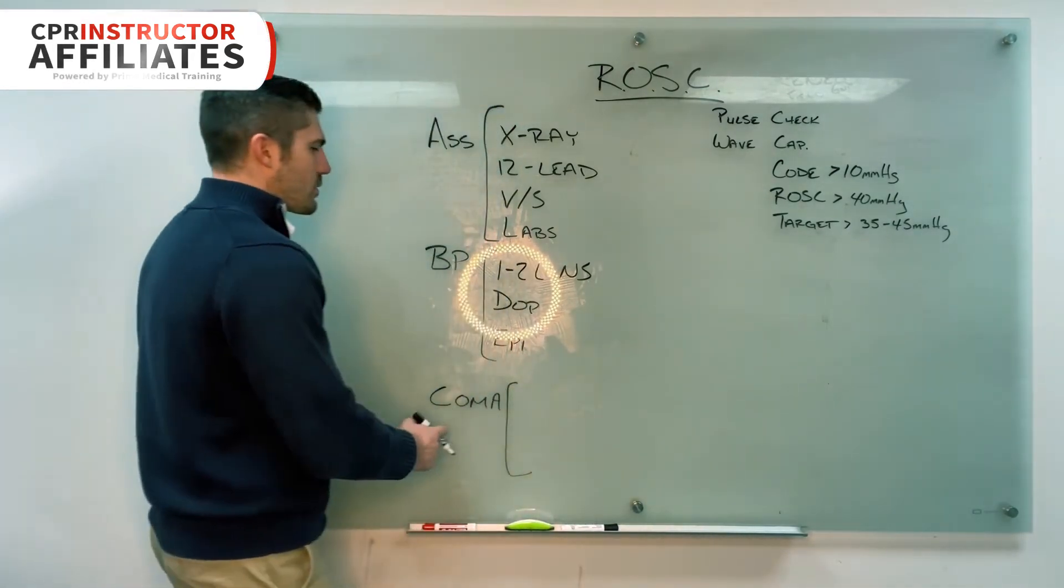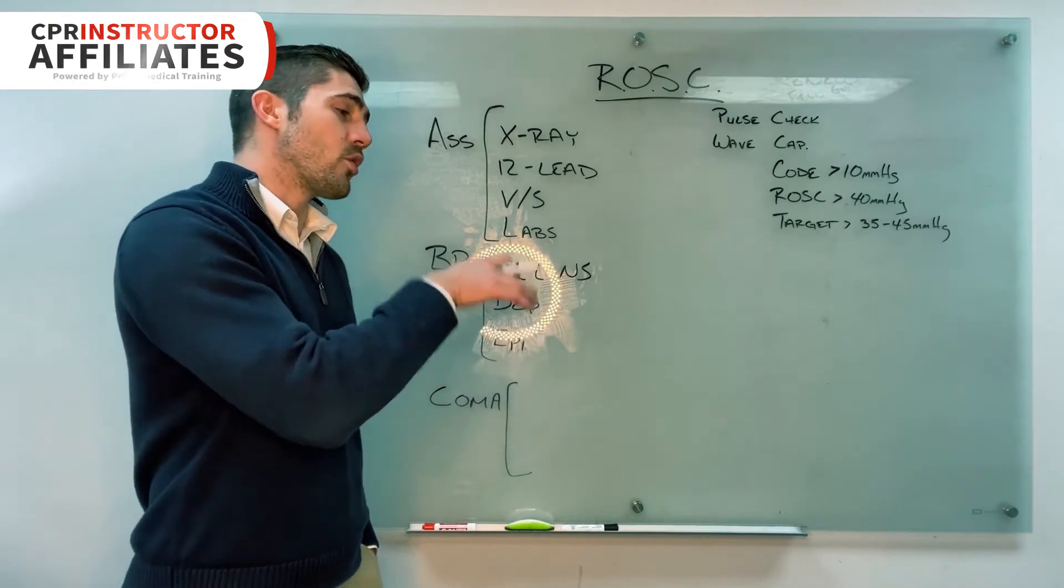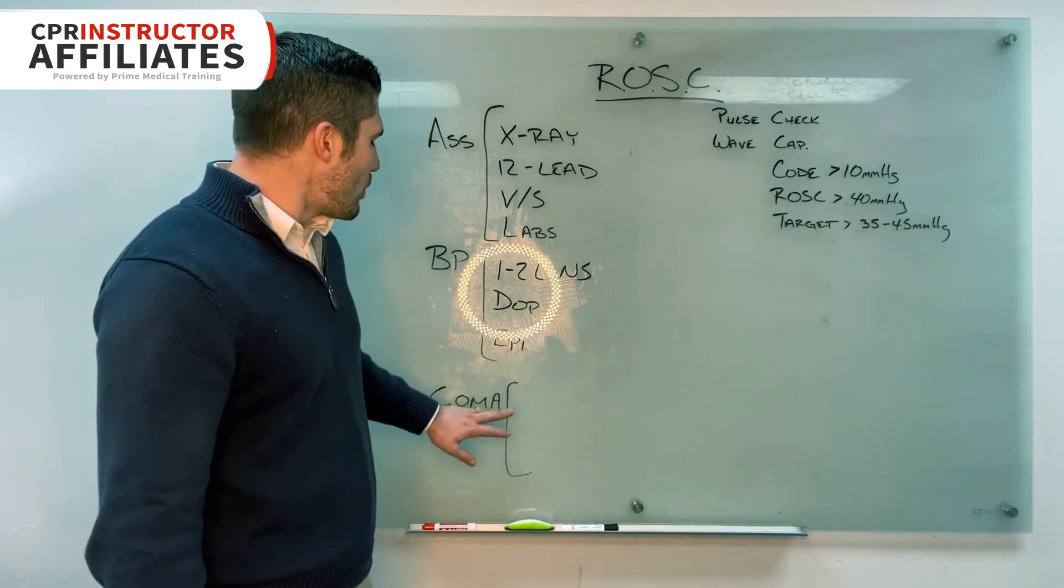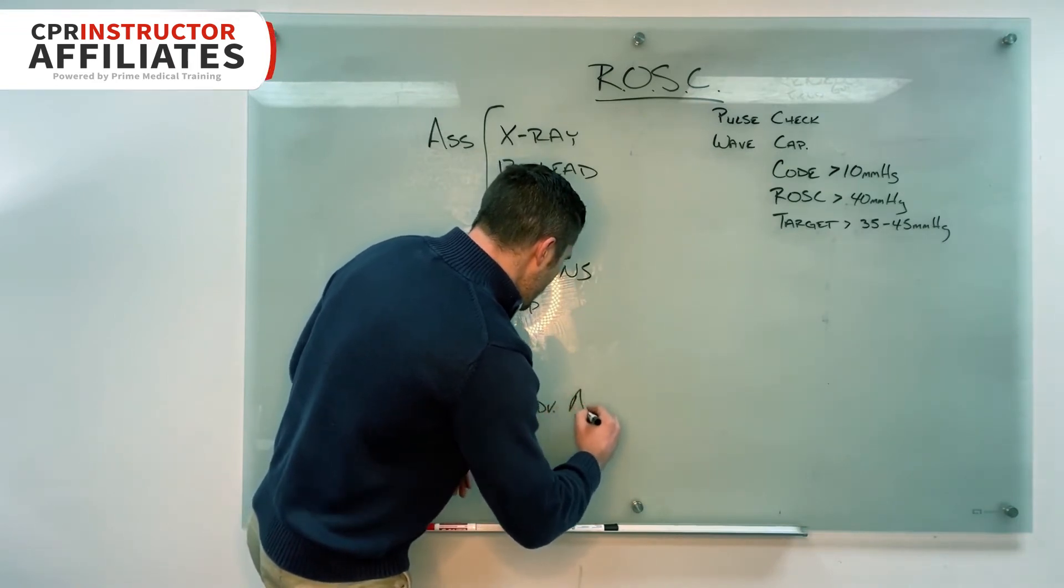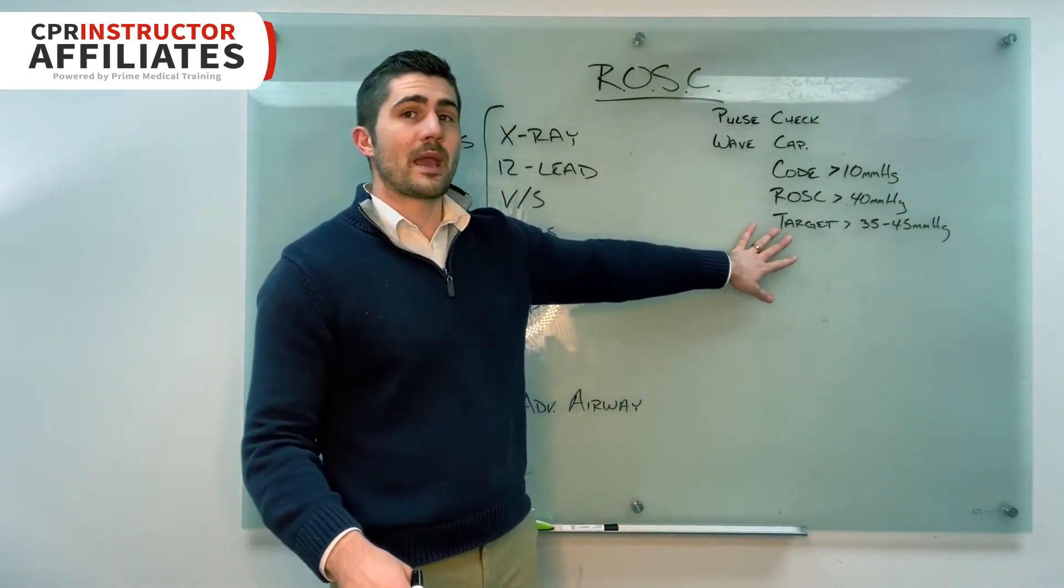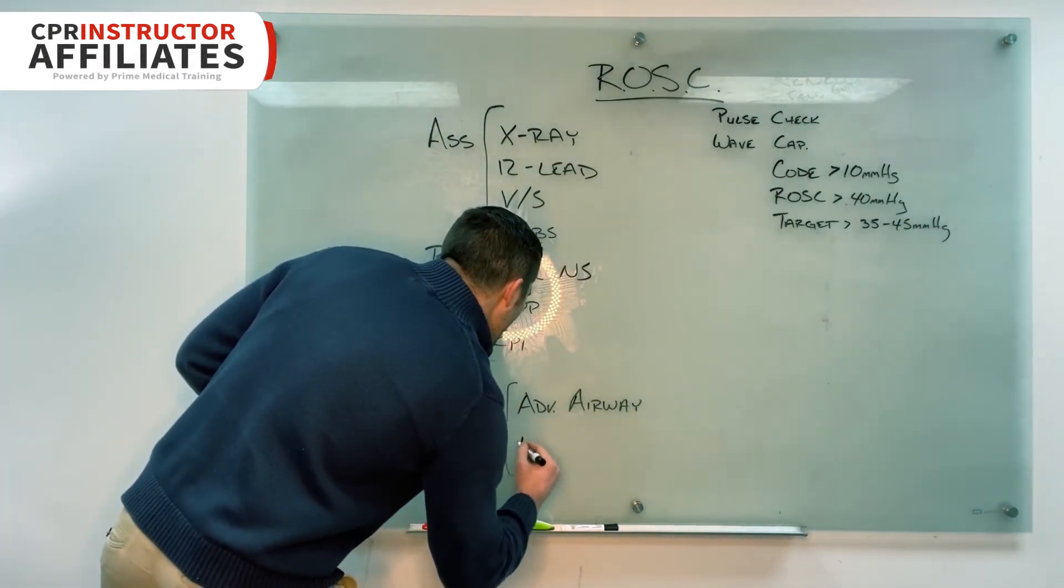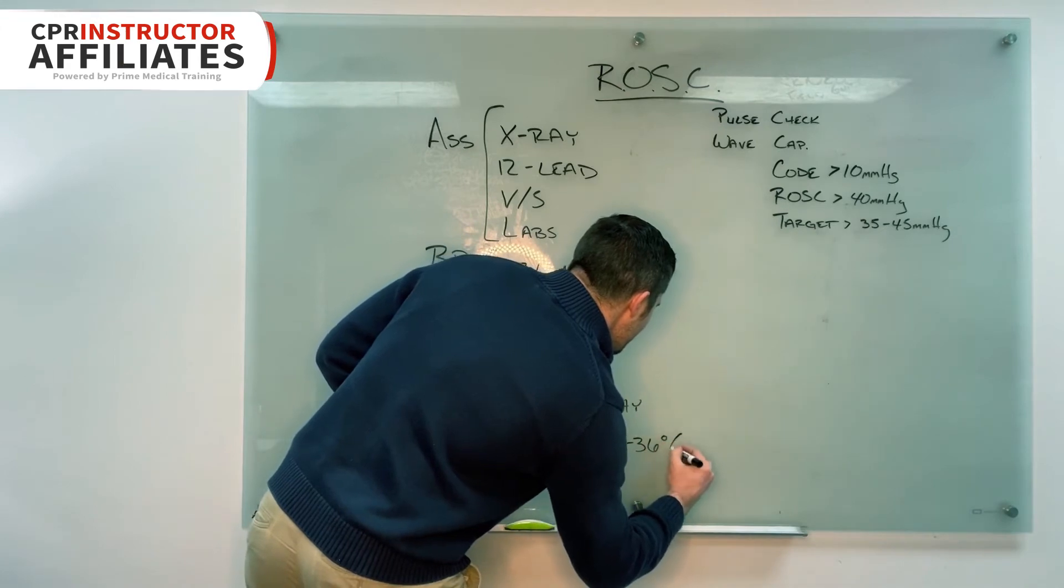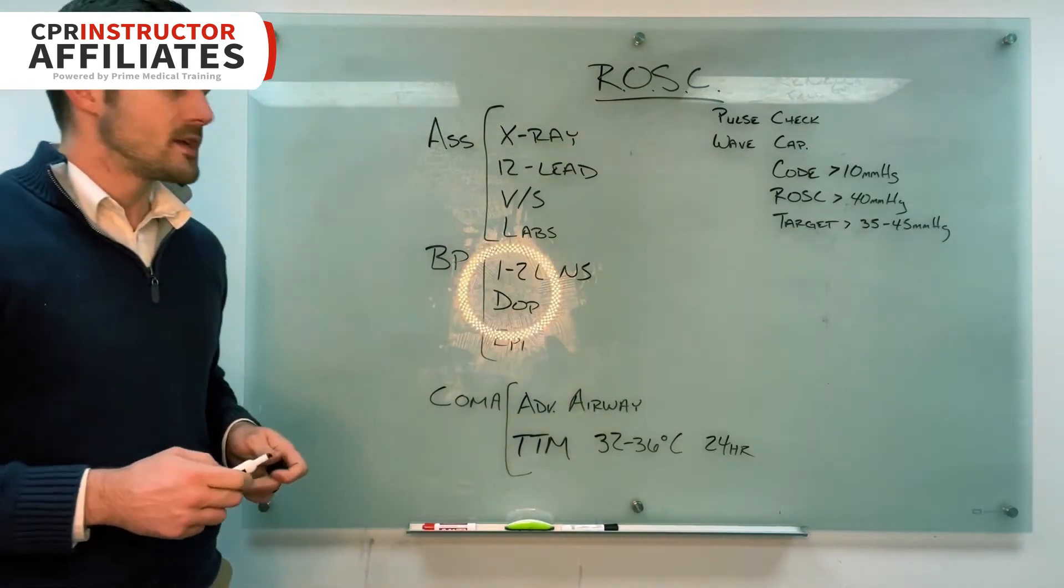Then we talk about comatose. So what happens with the comatose, which the majority of cardiac arrest survivors are going to be comatose after the cardiac arrest, we need to do two things. One is if we haven't already, we need to establish an advanced airway. Part of that is that we can maintain the waveform capnography of 35 to 45. And then we're going to do targeted temperature management. And we do this for 32 to 36 degrees Celsius. And we do it for up to 24 hours before we start the rewarming process.